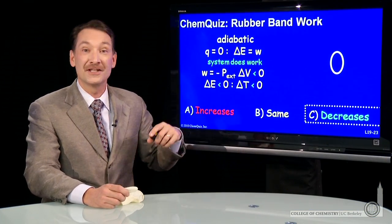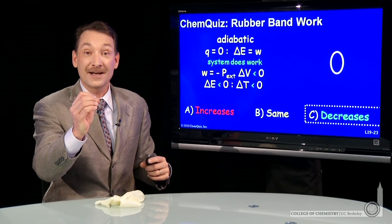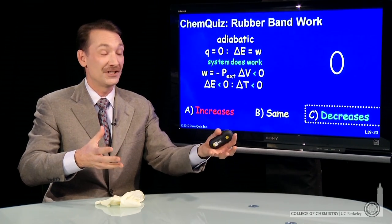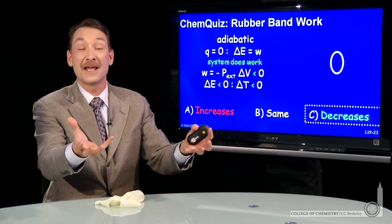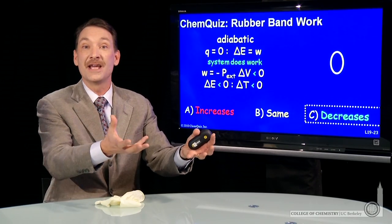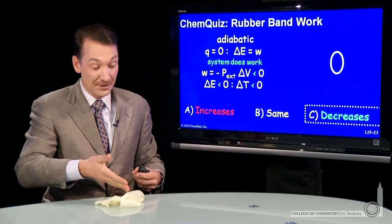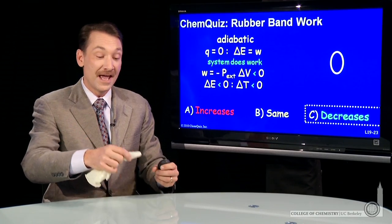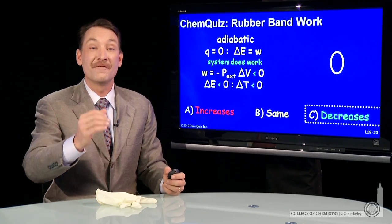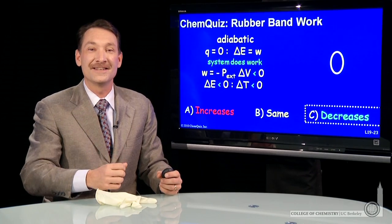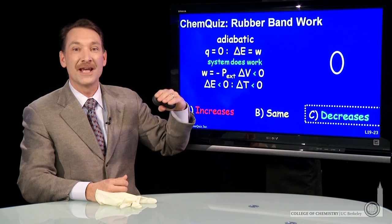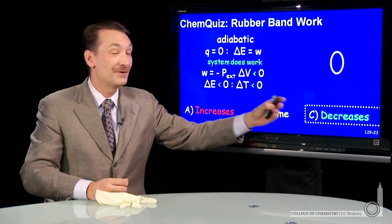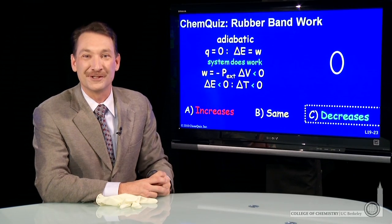The energy change and the temperature change are locked for an ideal gas. For an ideal gas, the energy and temperature change are essentially the same parameter: E equals 3/2 NRT. For other systems, like rubber, it's almost the same — energy changes and temperature changes are very often correlated, and in this case they are. The energy change for a system doing work is a decrease in energy and a decrease in temperature.